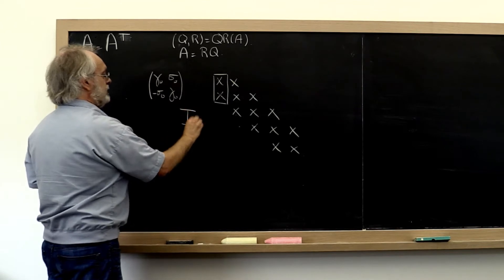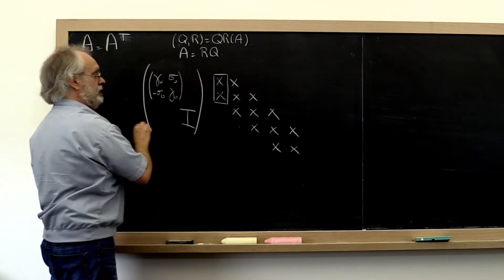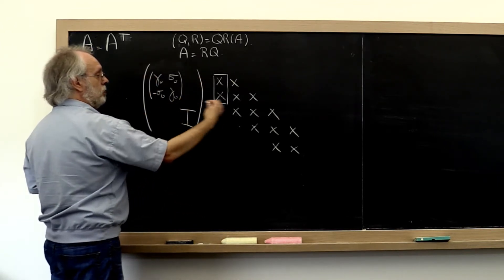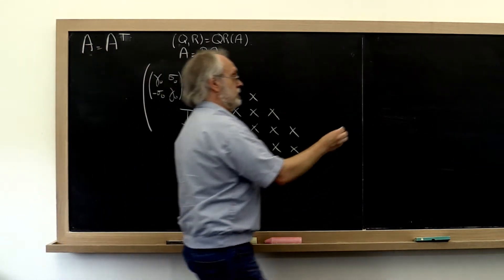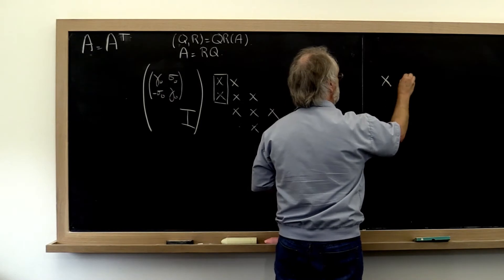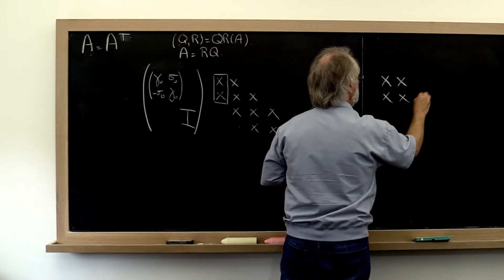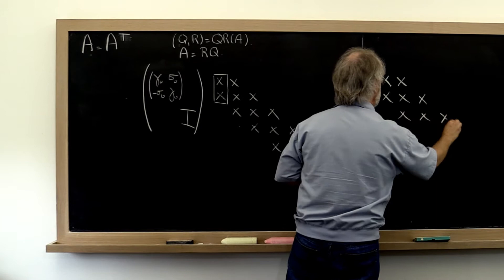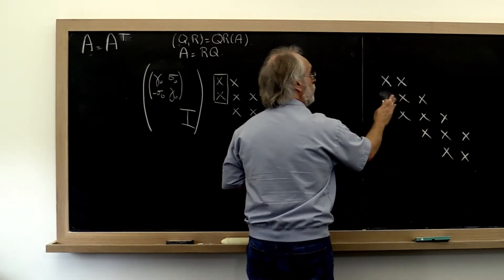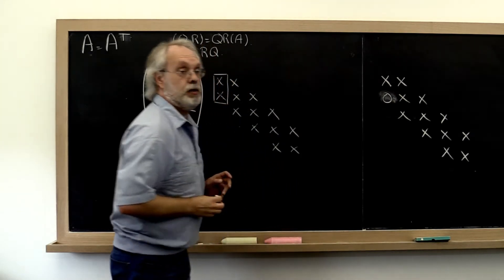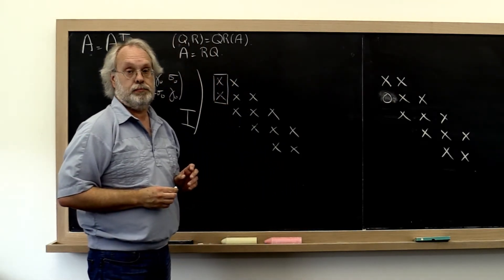We can create something that has the identity here. And when we apply that to this matrix, we introduce a zero right here. So our resulting matrix will look like this, except that now we have a zero introduced right there.